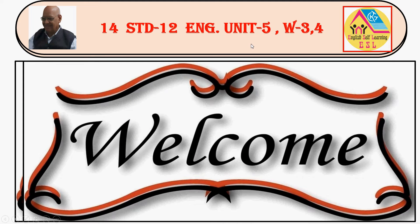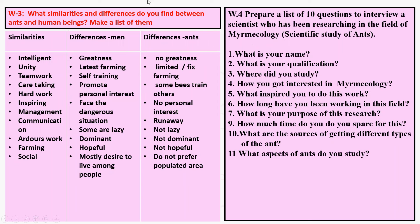Friends, this is the last video of this unit. It is Writing 14, Class 10th English, Unit 5, Writing C. The writing instruction is: what similarities and differences do you find between ants and human beings?